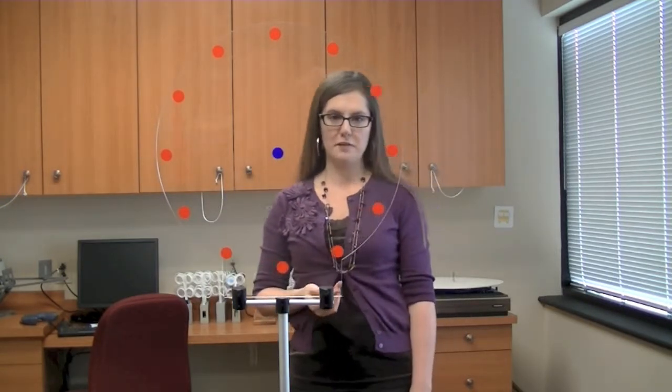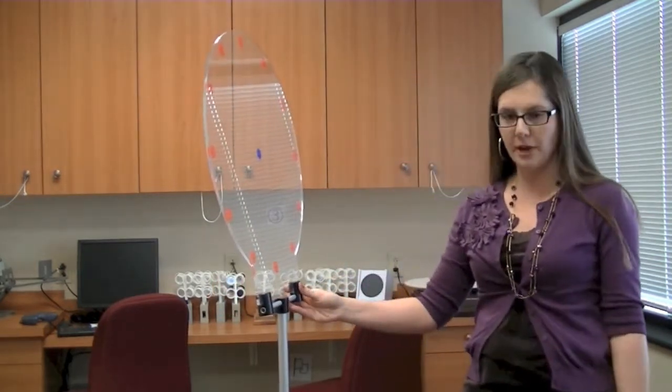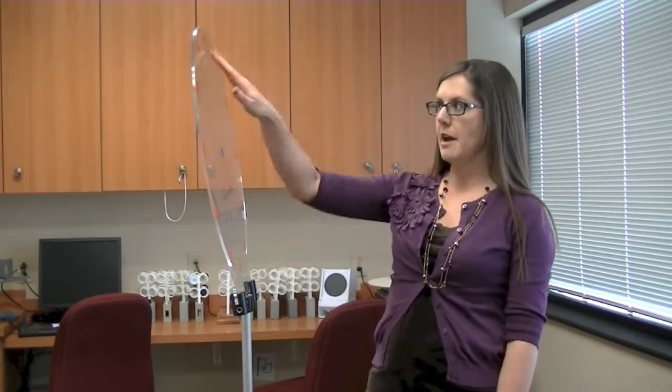There are several things that we're looking at with this particular activity. Many times, children who do not read well in school have difficulty tracking. We're going to teach them how to track more appropriately by having them go across to the different dots.